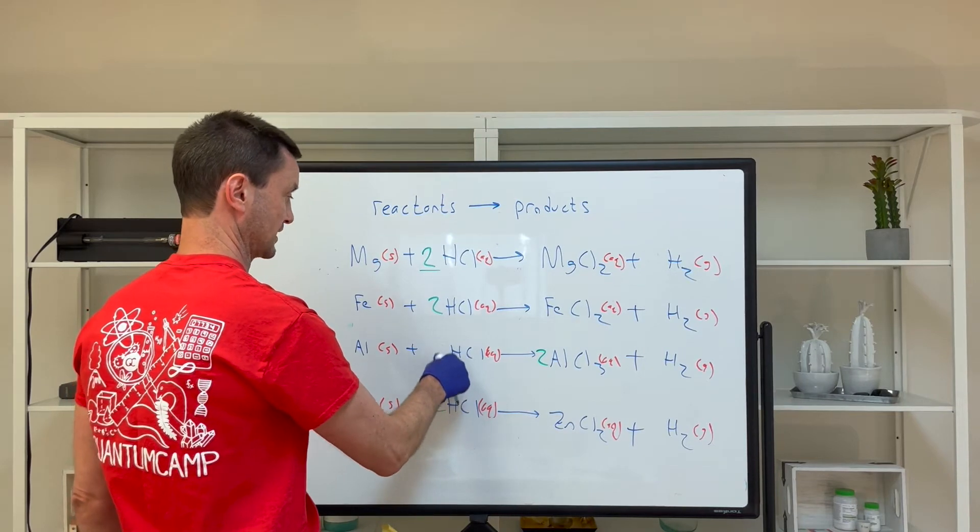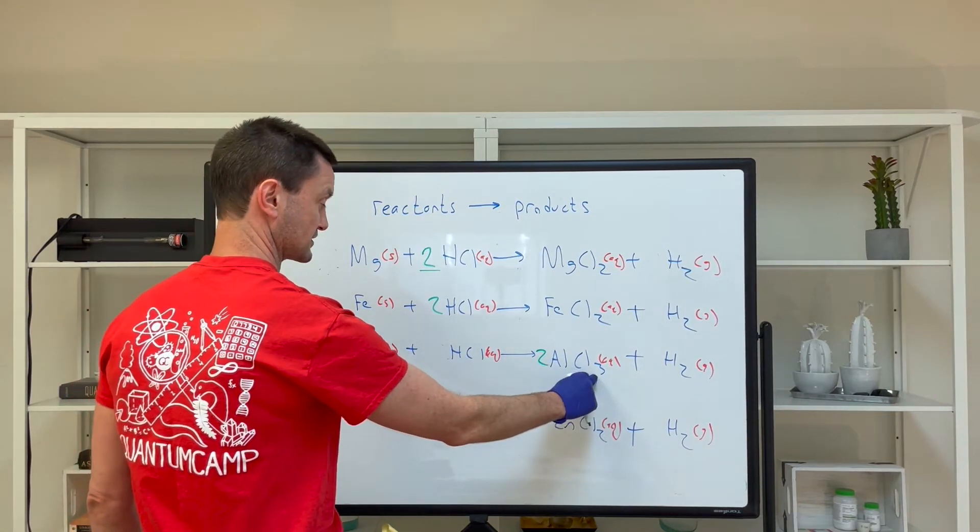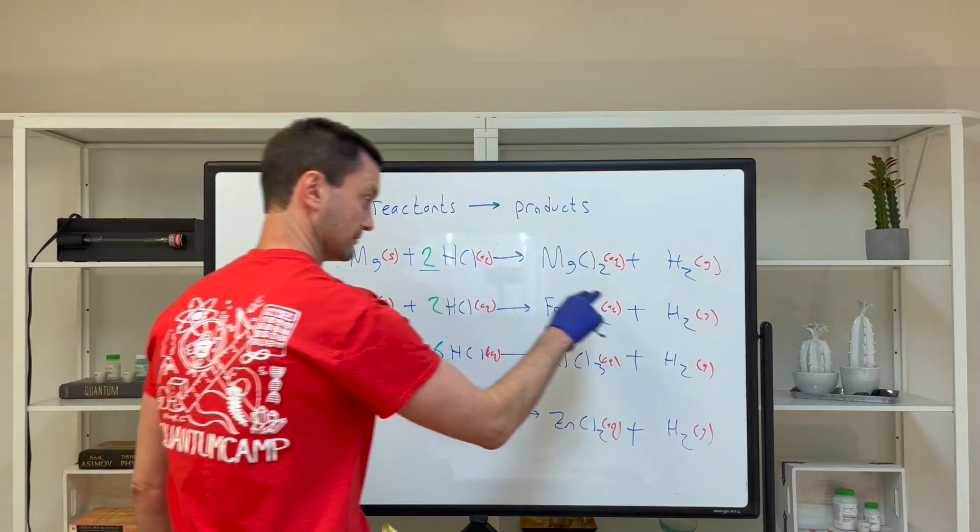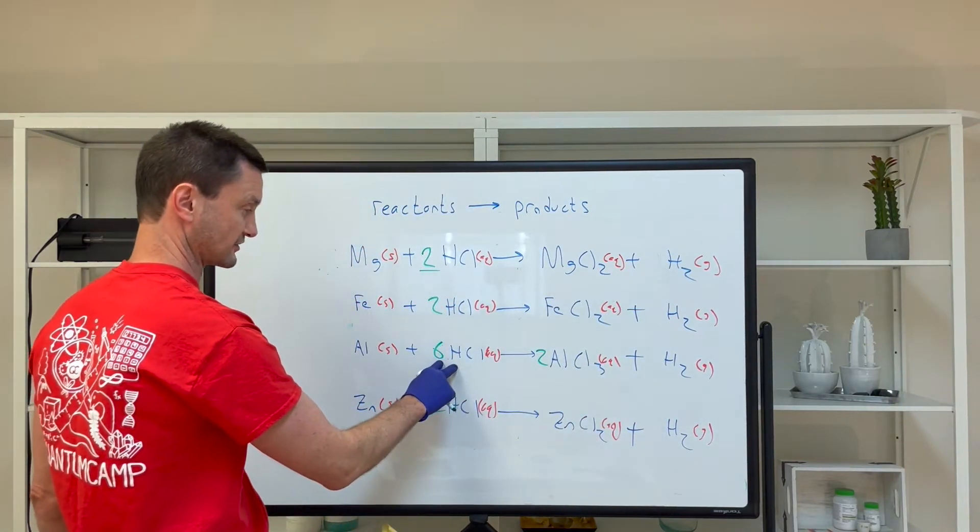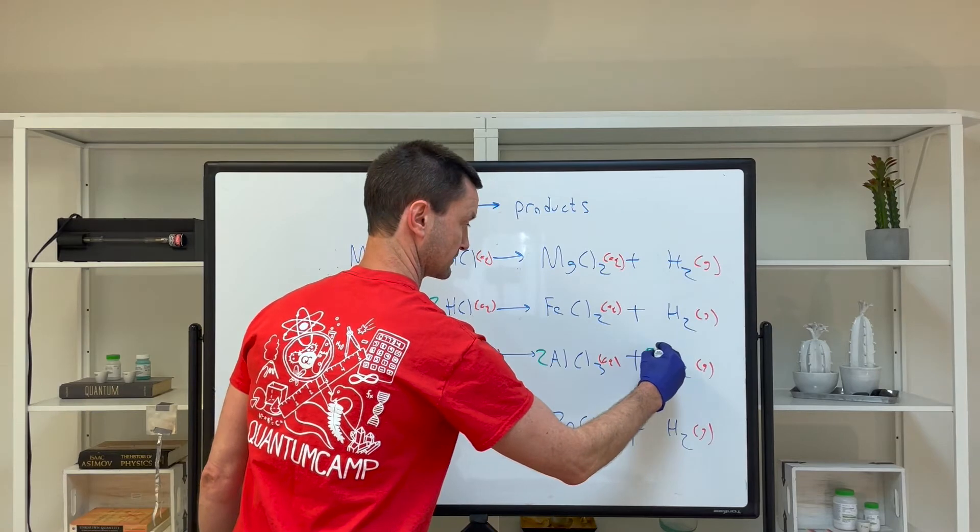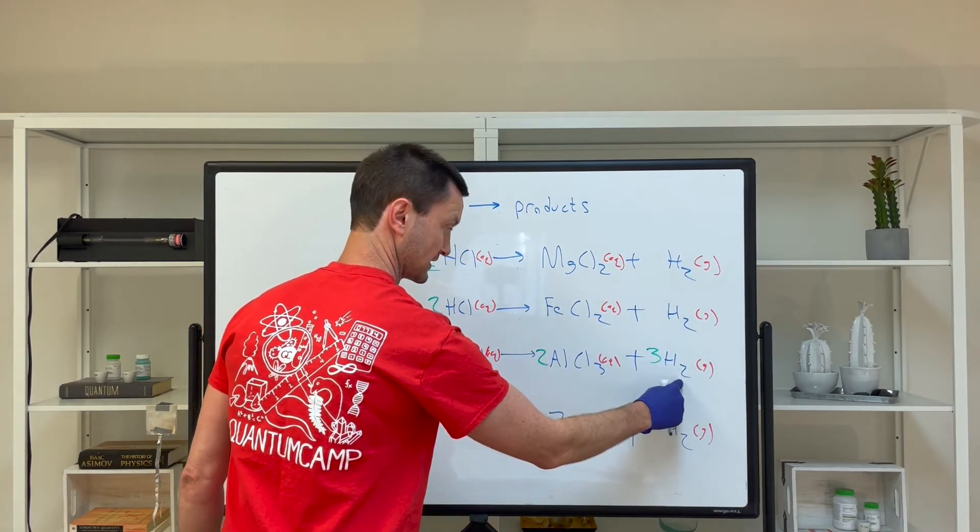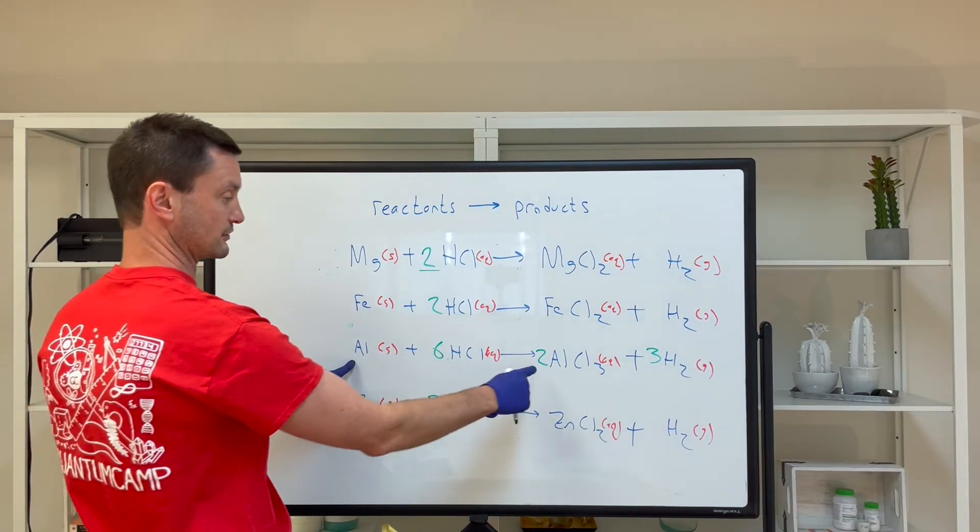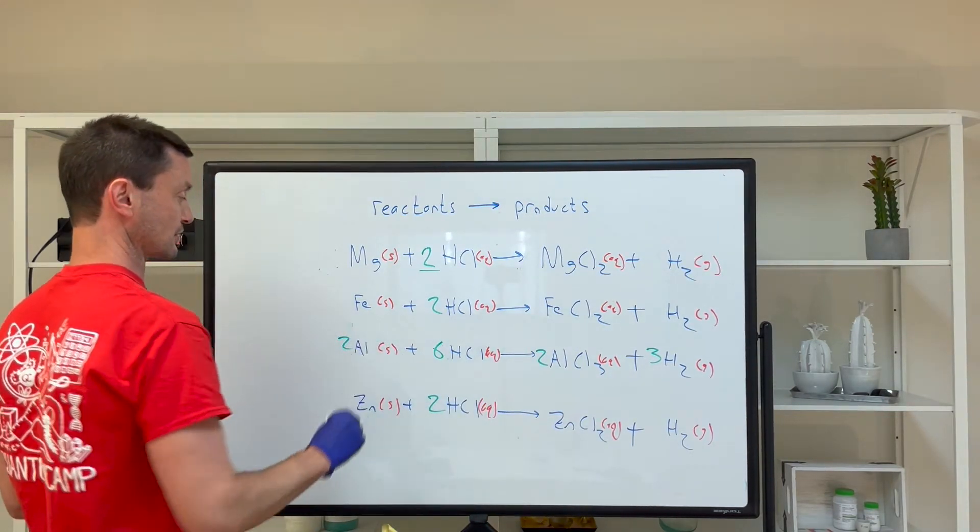I'm going to put a two right there. If I have six chlorines here, I can put a six here. But now I've messed up the hydrogen. If I have six Hs, I can clean up that mess. Three times two is six. The last thing is to balance the aluminums—I have two aluminums here, so I put a two here.